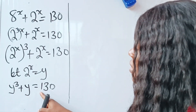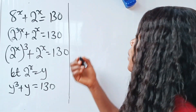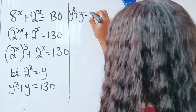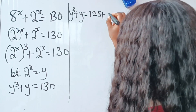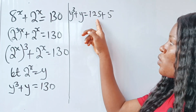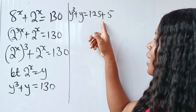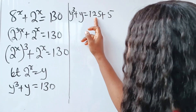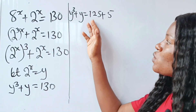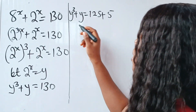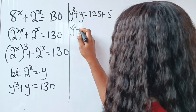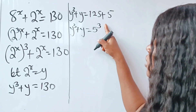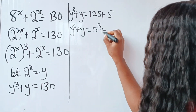So y to the power of 3 plus y is equal to 130. We can express 130 as 125 plus 5. I need 125 because that is what I raise to the power of 3 and then add the same thing — 5 — to get 130. That is why I chose 125 plus 5. So we have y to the power of 3 plus y is equal to 5 to the power of 3 plus 5.